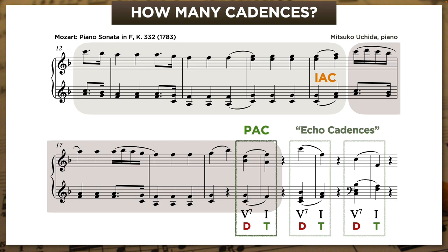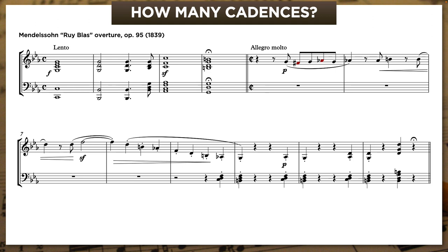I want you to keep all this in mind when we look at this piece: the opening of Mendelssohn's Rui Blas overture. The first four chords are a lament bass in a slow tempo. What follows is more animated, but it also stalls out almost immediately. When I play it, think about how the idea of the echo cadence applies here.